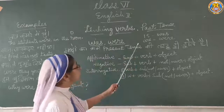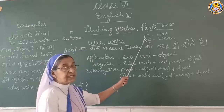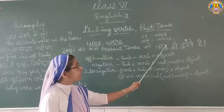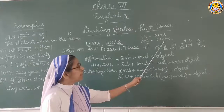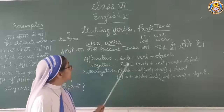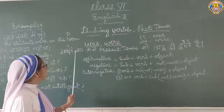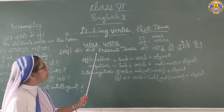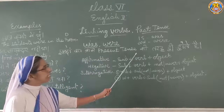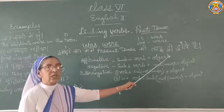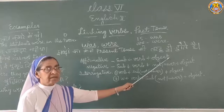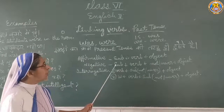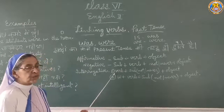The past tense of Is is Was, and the past tense of Are is Were. This is the 8th article from present tense. The same rules of mind apply to past tense also.